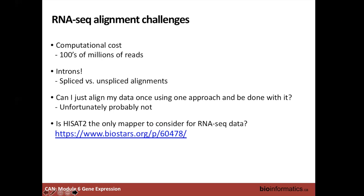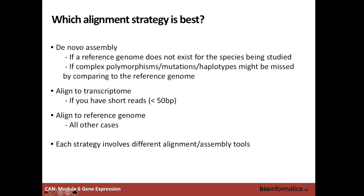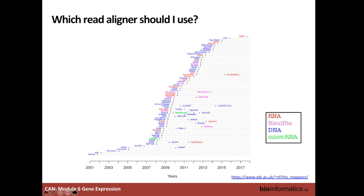There are different mappers you can use to align RNA-seq to the genome — one commonly used is STAR. You can find discussions on Biostars about the advantages of different aligners. With RNA-seq, there are three strategies: de novo assembly (if no reference), aligning to a transcriptome (only for very short reads), or — most commonly — aligning to a reference genome with a splice-aware aligner. One interesting plot shows the timeline of different alignment tools emerging since around 2009. TopHat was a very widely used aligner that came out in 2009, but it required a lot of memory and time — for 100 million reads it needed a cluster and couldn't run locally.